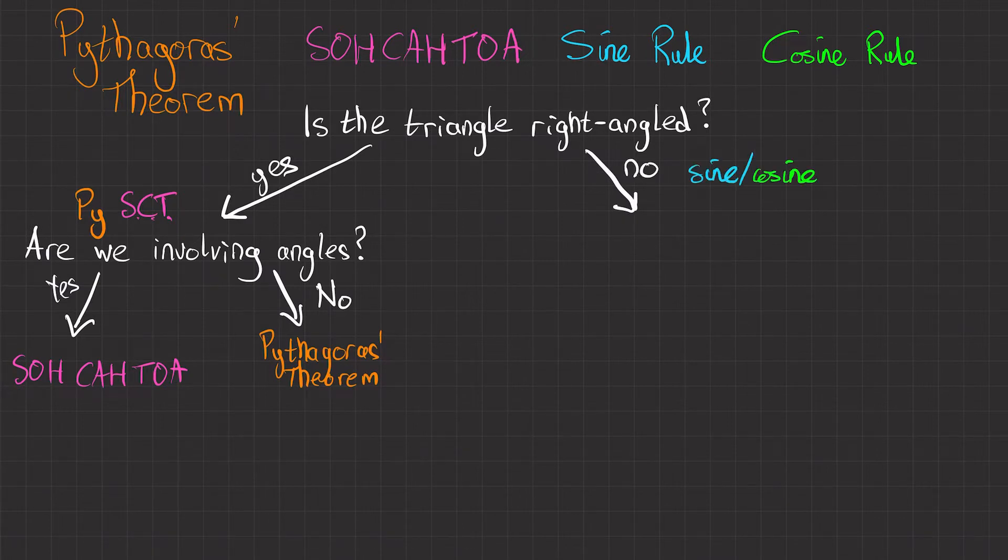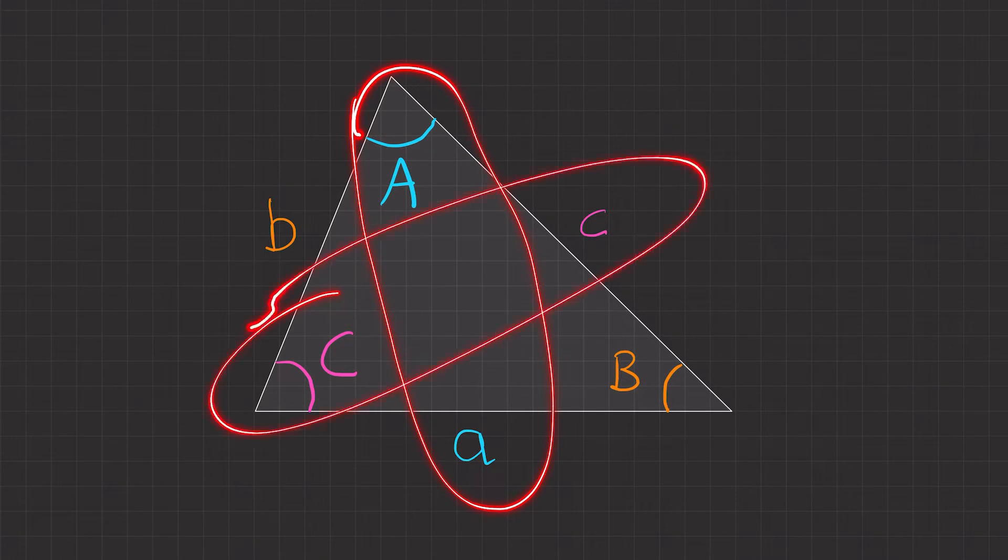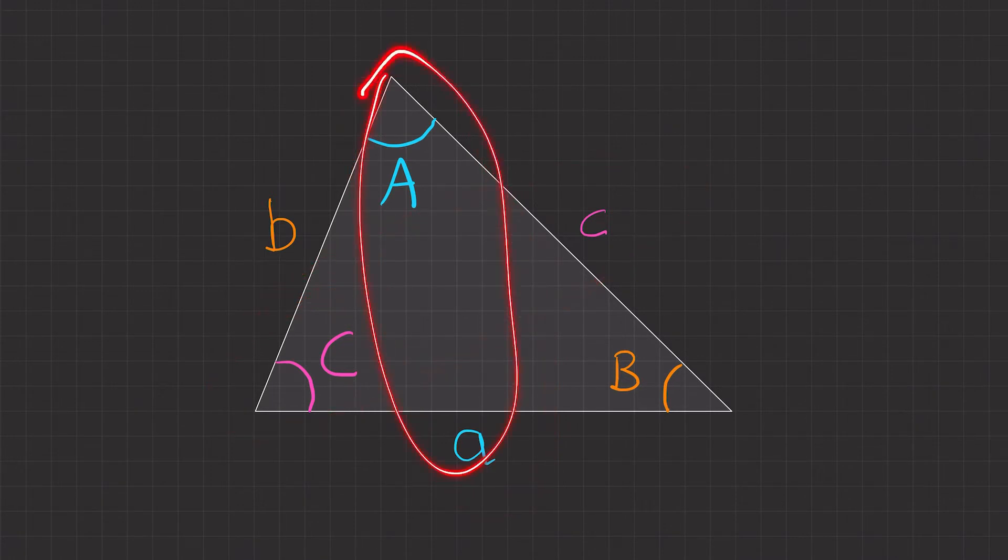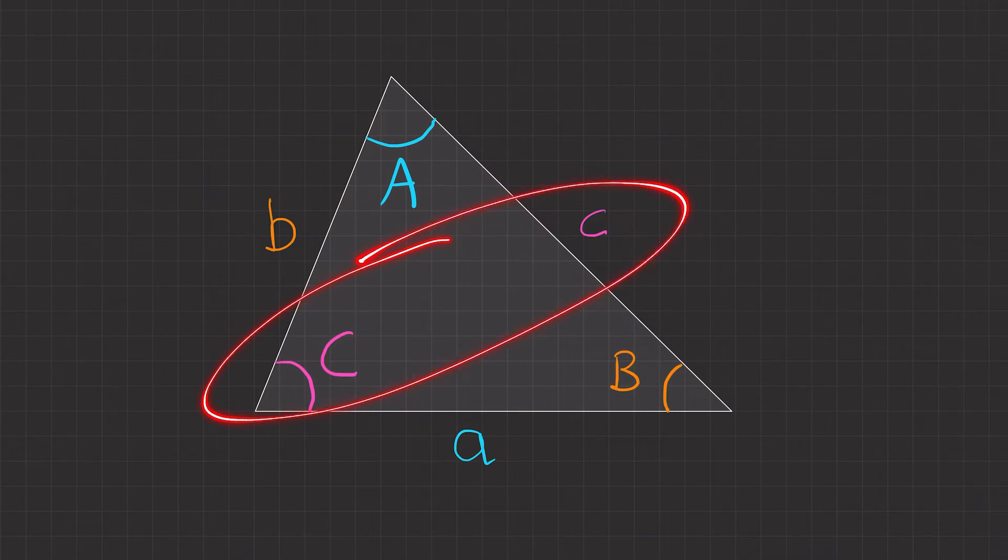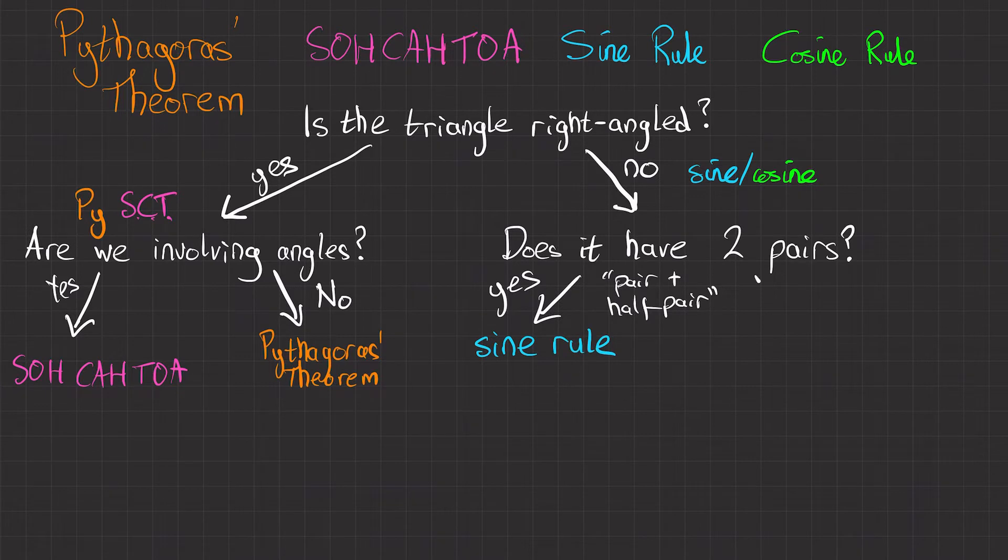The final question then is: does it have two pairs? And by that I mean, that's a pair and that's a pair. One pair may have both the values there and the other pair will only have one of the values and one missing value. So it's like a pair and a half. If it does have two pairs, then we can use the sine rule. If it doesn't have two pairs, then we use the cosine rule.